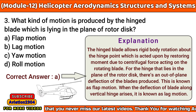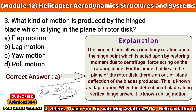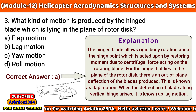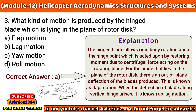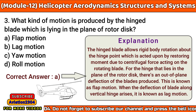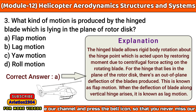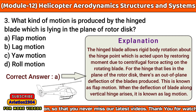What kind of motion is produced by the hinged blade which is lying in the plane of a rotor disc? A. Flap motion, B. Lag motion, C. Yaw motion, D. Roll motion. The correct answer is A. The hinged blade allows rigid body rotation about the hinge point, which is acted upon by the restoring moment due to centrifugal force acting on the rotating blade. For the hinge that lies in the plane of the rotor disc, there is an out-of-plane deflection of the blades produced, known as flap motion. When the deflection of the blade about a vertical hinge arises, it is known as lag motion.